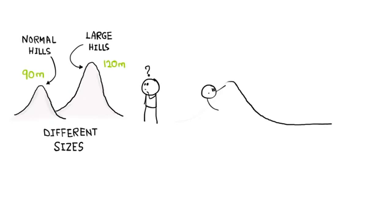90 meters doesn't refer to how tall the hill is. It's actually a measurement of the hill from the ramp to the point at which the slope starts to level out. And somewhere close to that point is a line called the K line.